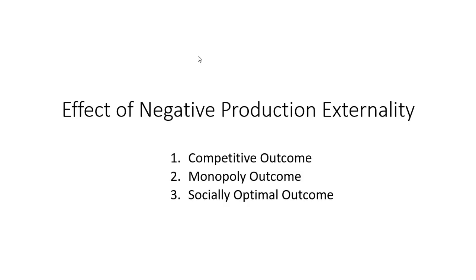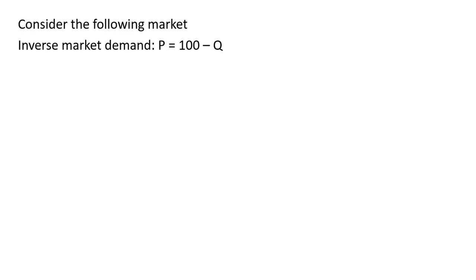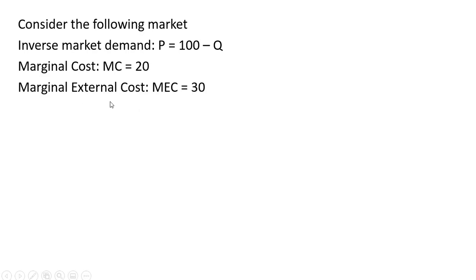Hello, in this video we're going to look at the effect of a negative production externality when dealing with a competitive market, a monopoly market, and then we'll also see what is socially optimal. We'll consider the following market: the inverse market demand is price equals 100 minus Q, the marginal cost is constant at $20, and the marginal external cost is $30.